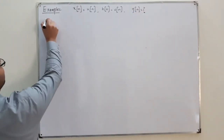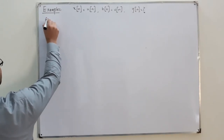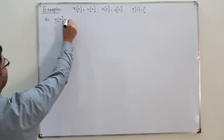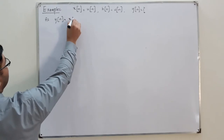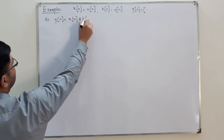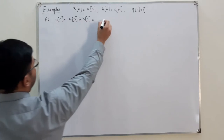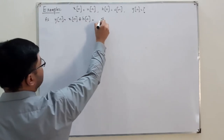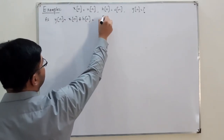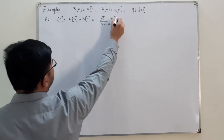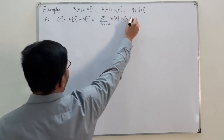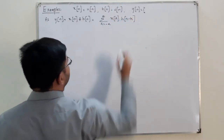The convolution sum is written as y(n) = x(n) convolved with h(n), which equals the summation with k running from negative infinity to positive infinity of x(k) multiplied by h(n minus k).